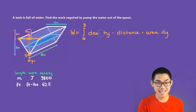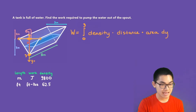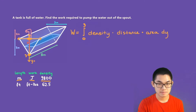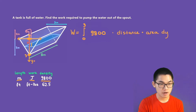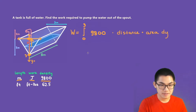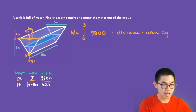How about the density? Since we're given the length in meters, the work will be in joules, and our density is 9,800. For the distance, the distance to pump a layer of water to the top is y, but we also have to pull it outside of the spout. So the total distance is y plus 2.